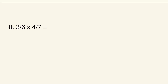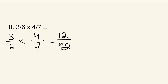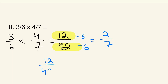Twelve over 42 also has a common factor — that number is six, since six divides both twelve and 42. We divide both by six: twelve divided by six is two, and 42 divided by six is seven. So twelve over 42 simplifies to two over seven. They are equivalent fractions.